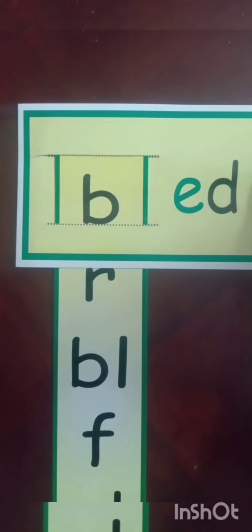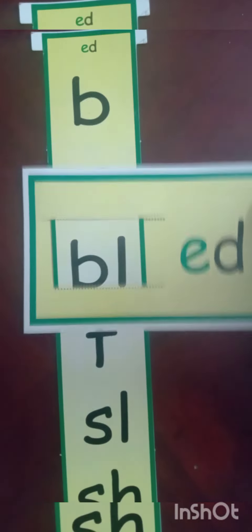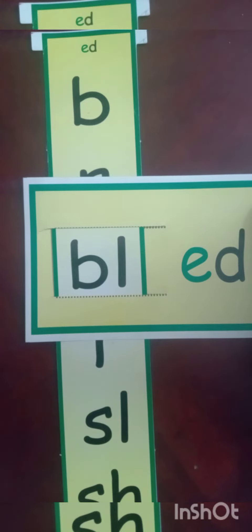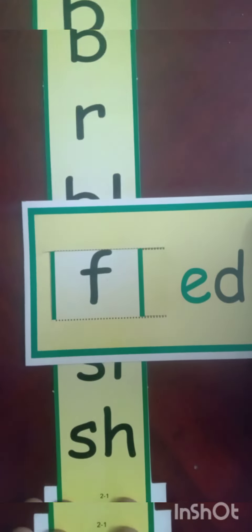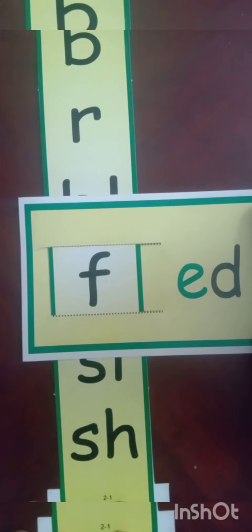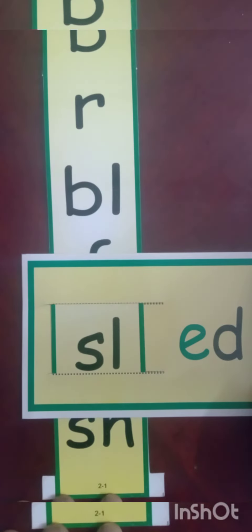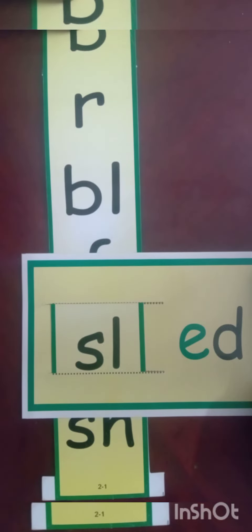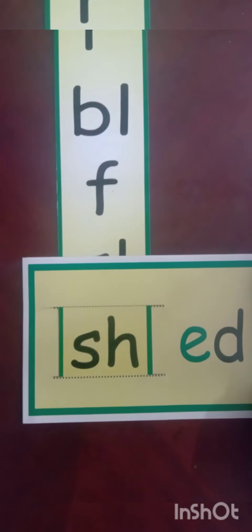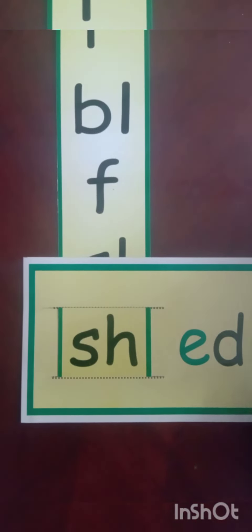The sound of B is 'b'. B. The sound of R is 'r'. R. The sound of B is 'b'. B. The sound of L is 'l'. L. The sound of F is 'f'. F. The sound of SH is 'sh'. Sh.